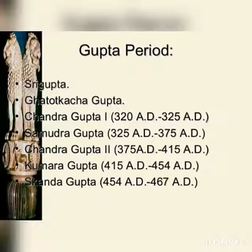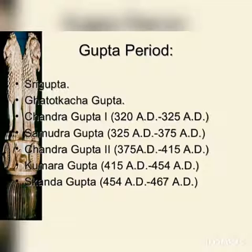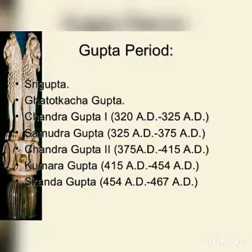Next is Samudra Gupta. Samudra Gupta was perhaps the greatest king of the Gupta dynasty. The most detailed and authentic record of his reign is preserved in the Allahabad Pillar inscription, composed by his court poet Harisena. Samudra Gupta believed in a policy of war and conquest and has been termed the Napoleon of India by Vincent Smith. When he died, his mighty empire bordered with the Kushans of the western provinces and the Vakatakas in the Deccan.